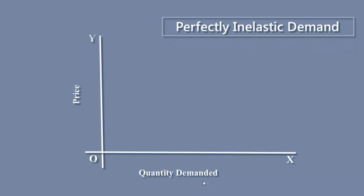Perfectly inelastic demand refers to no change in quantity demanded for any change in price. Look at the demand curve — it is a vertical straight line, parallel to the Y-axis. Even though price falls from P2 to P1, the quantity demanded remains unchanged at M. Demand is totally unresponsive. We have learnt the five kinds of elasticity of demand. In the next lesson, we shall learn how to measure price elasticity.